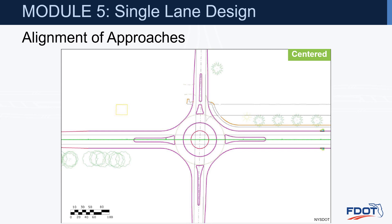A centered alignment places the roundabout right in the center of the intersection, and the approaches and exits are simply brought in with some radii. This is a very standard, almost cookie-cutter type of design — you can see there's really no speed control or deflection on those entries, so you'd be able to get into the circle pretty quickly. This may be fine for a low-speed residential area, but on the state highway system we'd want more speed control, and that's where the left of center design comes in.